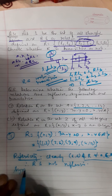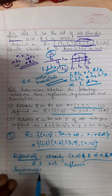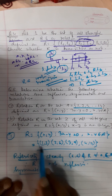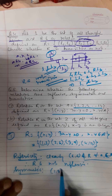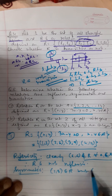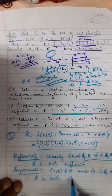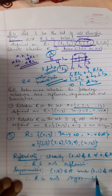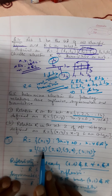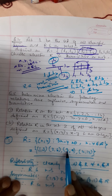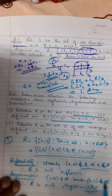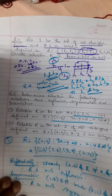For symmetry: (1,3) belongs to R, but (3,1) does not belong to R. Therefore, R is not symmetric. For transitivity: (1,3) belongs to R and (3,9) belongs to R, but (1,9) does not belong to R. Therefore, R is not transitive.